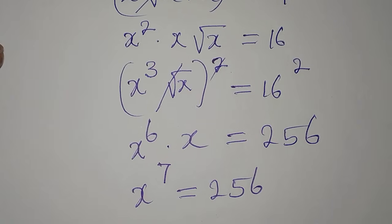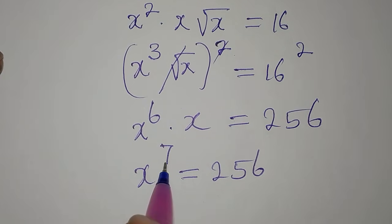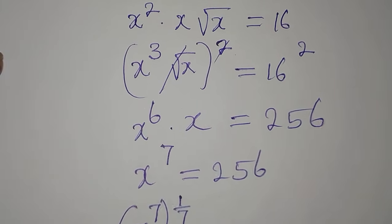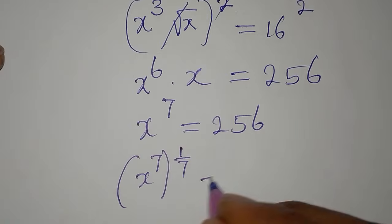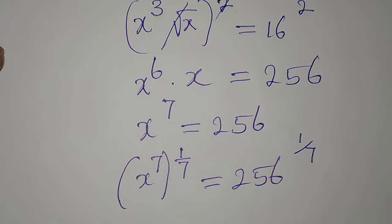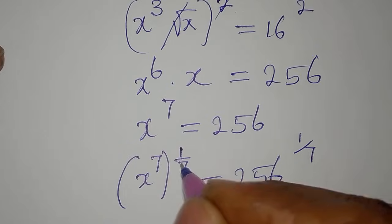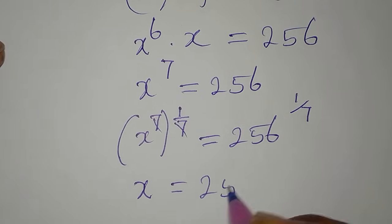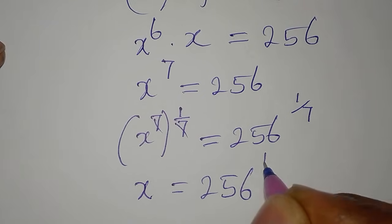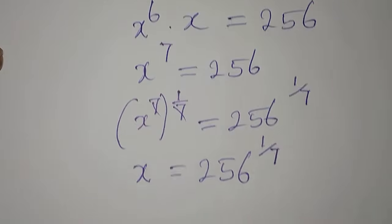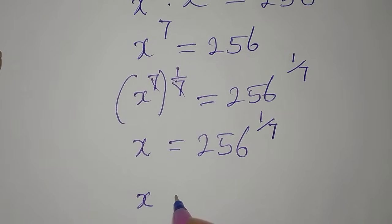We still need to remove this power from the left side. We do that by raising both sides to the reciprocal power, 1 over 7. So 256 also gets raised to the power of 1 over 7. The power on x cancels, leaving x alone, equal to 256 to the power of 1 over 7.